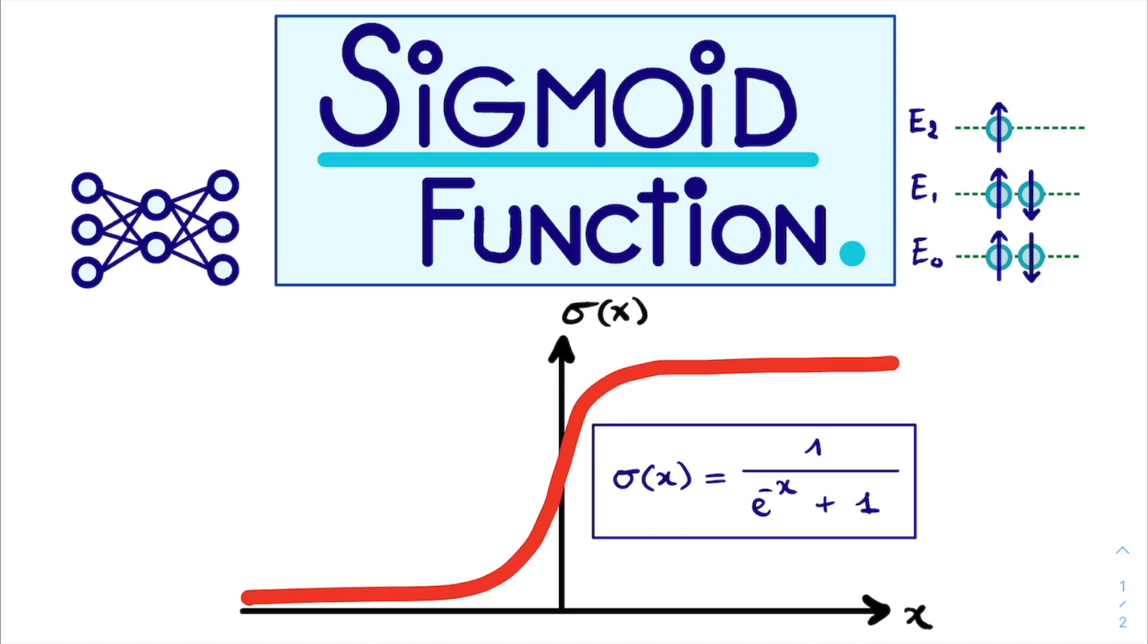The reason why it is so prominent in many learning algorithms is due to its many interesting properties. It approaches 0 for x going to minus infinity and tends to 1 when x gets very large. And right in the middle, when x equals 0, the function is exactly one-half.